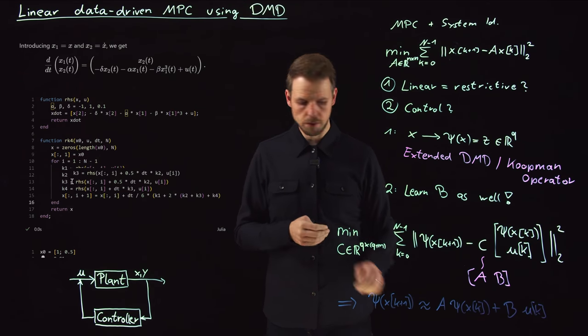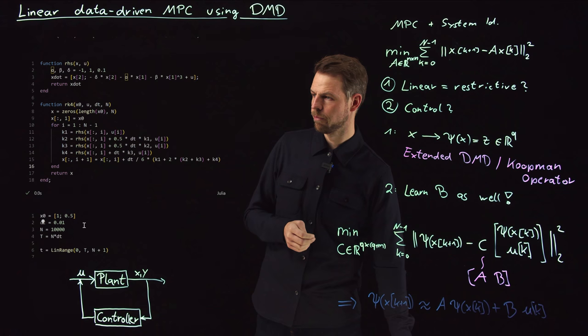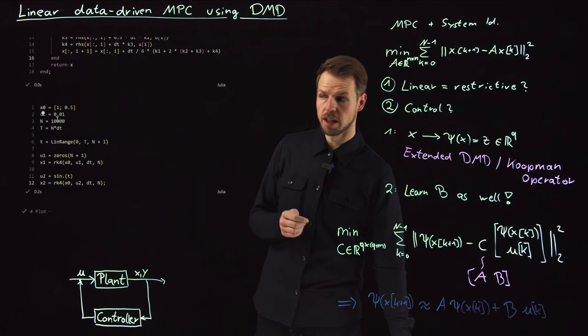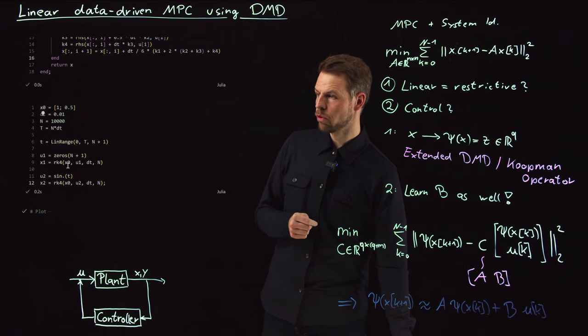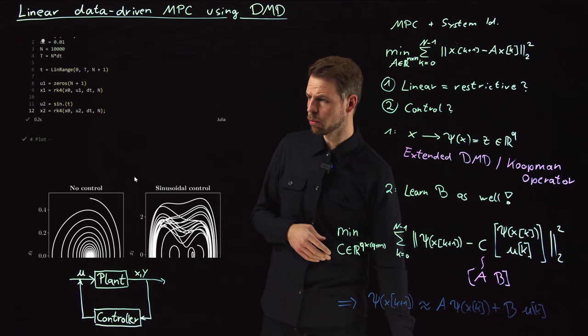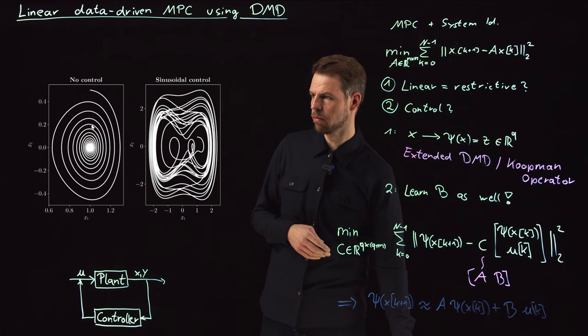And I'm using a Runge-Kutta integrator of fourth order to make a prediction, so a nonlinear system, and I integrate it in time. And so what you then get is if you simulate this with an initial condition over a large number of time steps using two different inputs, so I'm simulating the system without any control, and with a simple sinusoidal input just to see what's going on. Then you obtain the following behavior.